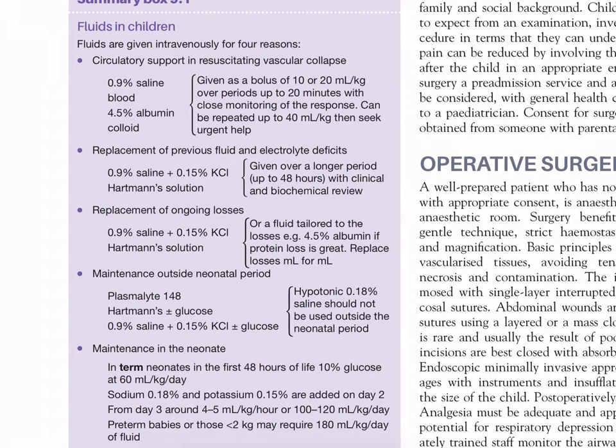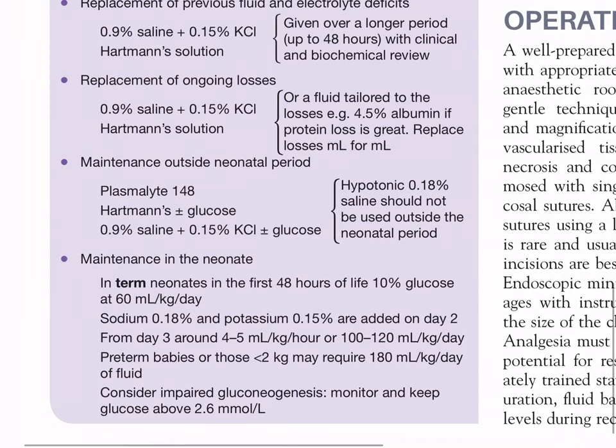Fourth: maintenance outside the neonatal period — Plasmalyte 148 or Hartmann's plus or minus glucose; 0.9% saline plus 0.15% KCl plus or minus glucose. Hypotonic 0.18% saline should not be used outside the neonatal period. Maintenance in the neonate: in term neonates in the first 48 hours of life, use 10% glucose at 60 ml/kg/day; sodium 0.18% and potassium 0.15% are added on day 2. From day 3, around 4–5 ml/kg/hour or 100–120 ml/kg/day. Pre-term babies or those less than 2 kg may require 180 ml/kg/day. Monitor and keep glucose above 2.5 mmol/litre.